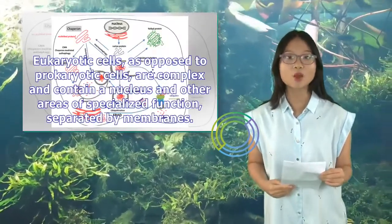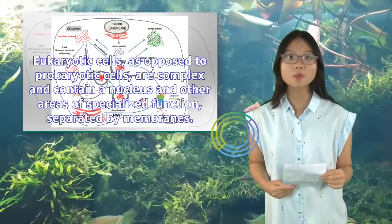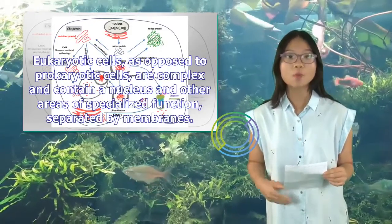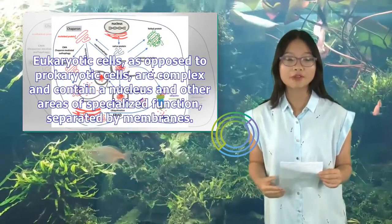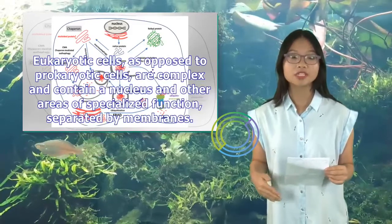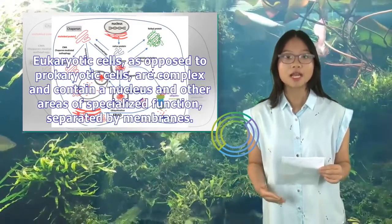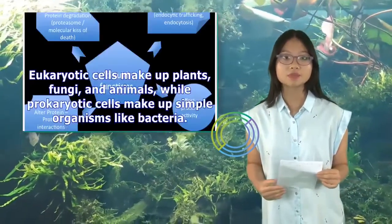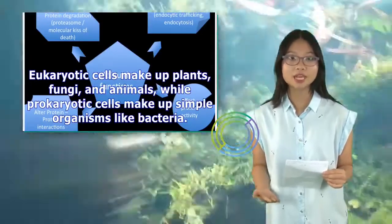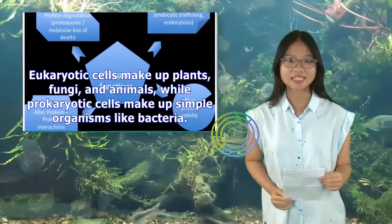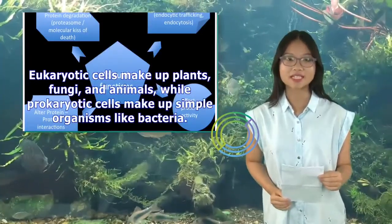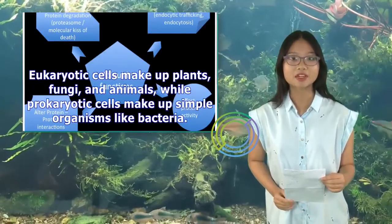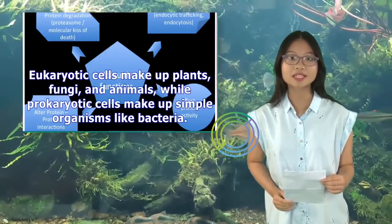Eukaryotic cells, as opposed to prokaryotic cells, are complex and contain a nucleus and other areas of specialized function, separated by membranes. Eukaryotic cells make up plants, fungi, and animals, while prokaryotic cells make up simple organisms like bacteria.